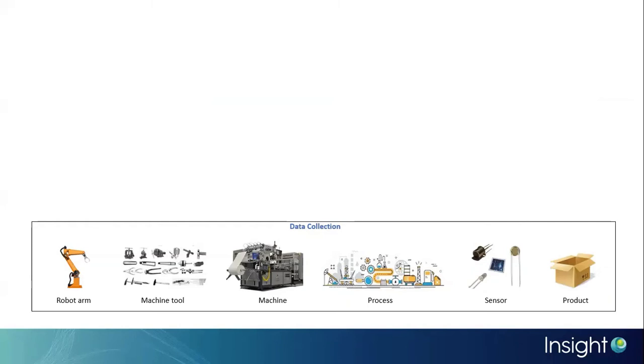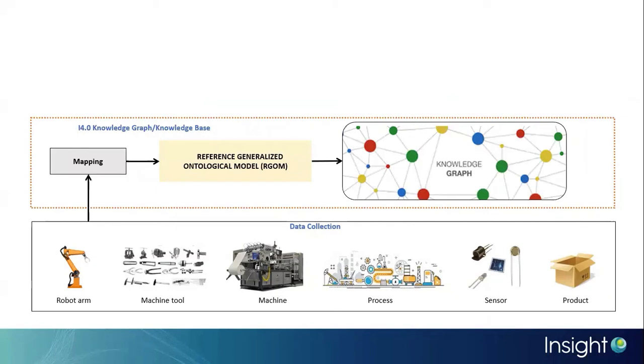The collected data is then mapped with our developed ontology known as the reference generalized ontological model. This model contains the production line concepts.